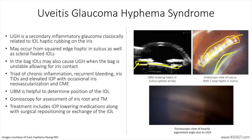Gonioscopy is essential to determine presence of blood that may not be visible without direct view of the angle. The level of angle pigmentation — look for distribution of pigment in all quadrants — and examine meticulously for any possible tumors that may mimic UGH syndrome, should also be noted as seen here in the bottom figure.